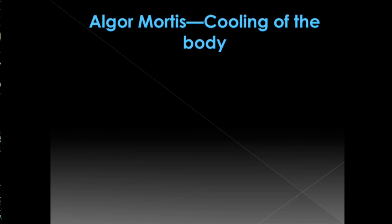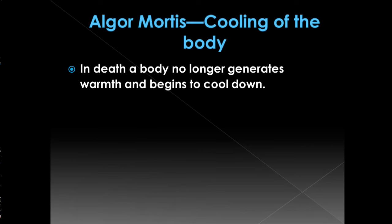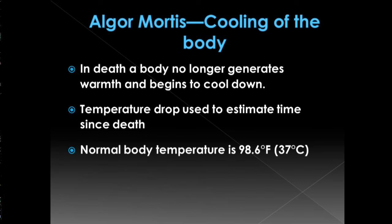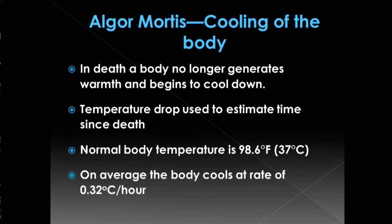We then observe algor mortis, commonly referred to as the cooling of the body. Once an individual is deceased, their body no longer generates warmth or maintains a set temperature. Our normal body temperature is about 98.6 degrees Fahrenheit, and on average the body cools at a rate of about 0.32 degrees Celsius per hour. By taking the temperature of a corpse and inserting it into a formula, we can estimate how long the individual has been deceased.